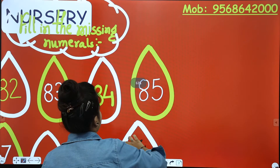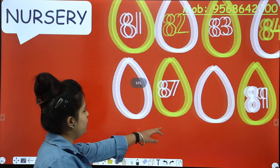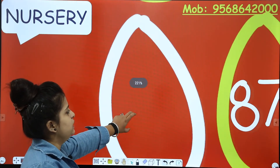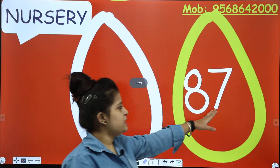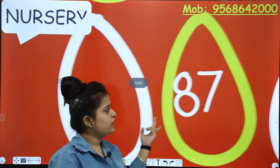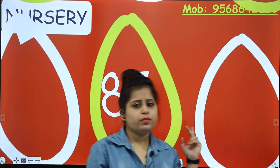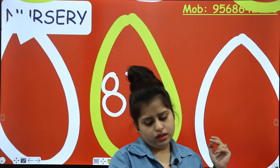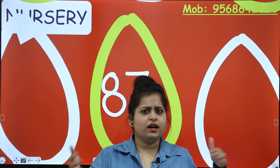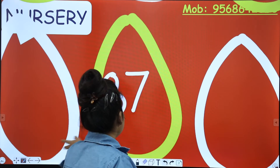85. So we are done till 85. Here we are having a blank. Count: 1, 2, 3, 4, 5, 6, 7. So what has it come before? 6. So what will be the number? 86.